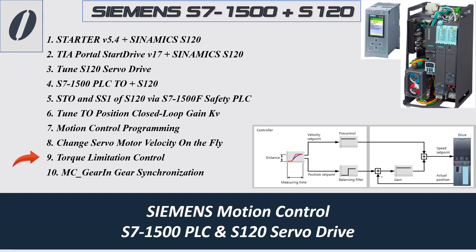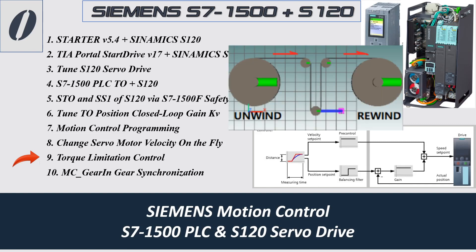Topic nine, I will show how we can implement torque limitation for the servo drive. Velocity control on the fly and torque limitation are two functions that are always used together. They are typical functionalities for implementing winder control — converting, rewind, or unwind systems. Torque limitation is a typical function when using a servo control system.